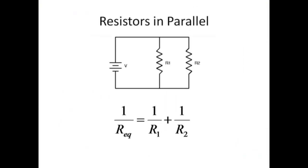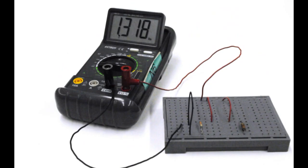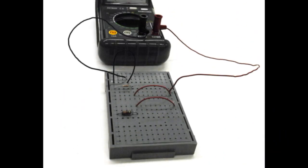For resistors in parallel, we add the inverses to determine the inverse of the equivalent resistance. Here are two resistors placed in parallel. Remember that the rows of holes along the long sides of the circuit board are connected along the entire length.